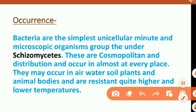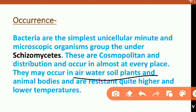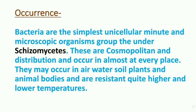Now let's look at the occurrence of bacteria. Bacteria show cosmopolitan distribution and come under the class Schizomycetes, which is especially the class of fungi. These are found mostly in air, water, soil, plants, and animal bodies — they are cosmopolitan in distribution.